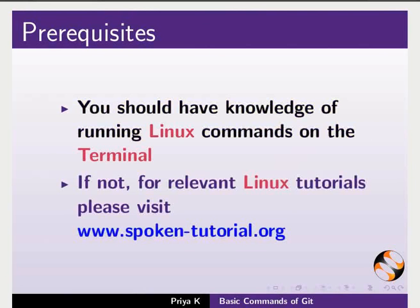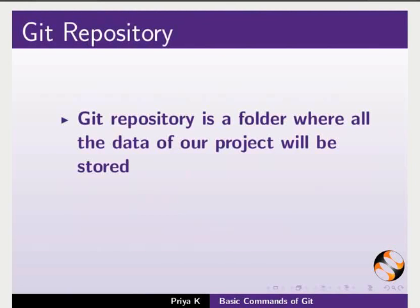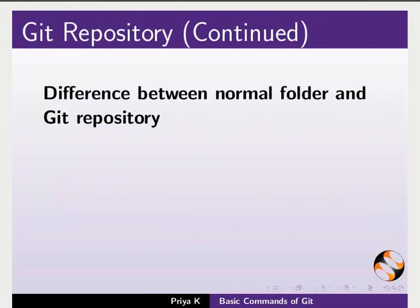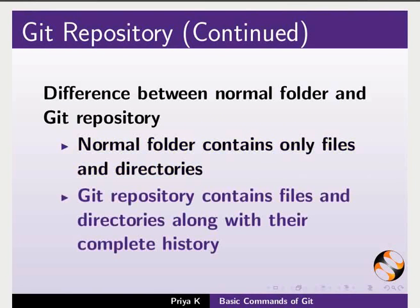Now we will see what is a Git repository. A Git repository is a folder where all the data of our project will be stored. It can be located on the local machine or on a remote machine. The difference between a normal folder and a Git repository is that a normal folder contains only files and directories, but the Git repository contains a set of files and directories along with their complete history.